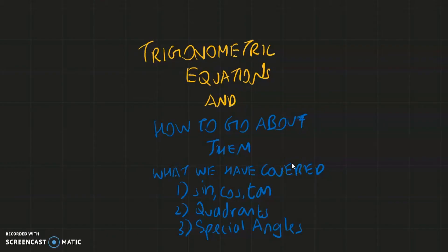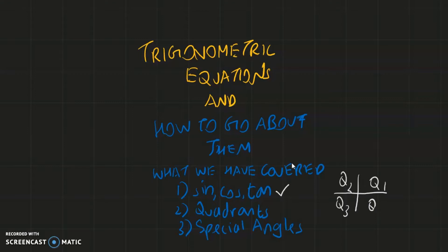So far in trigonometric functions we have covered exactly what is sine, cosine, and tangent, and as a bonus we covered secant, cosecant, and cotangent. Then we discussed the system of quadrants — quadrant 1, quadrant 2, quadrant 3, and quadrant 4 — and how they are significant in identifying whether trigonometric identities are positive or negative.